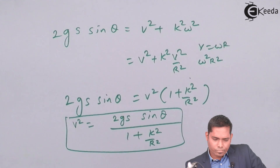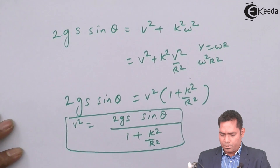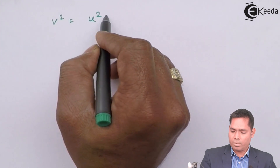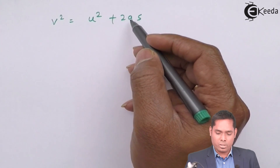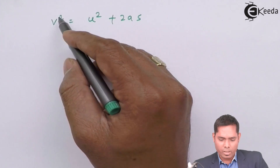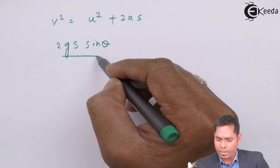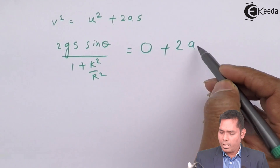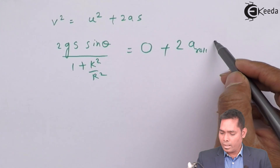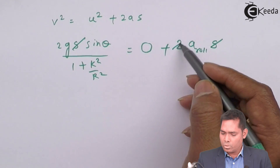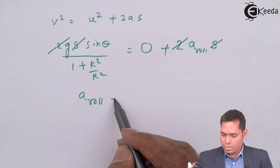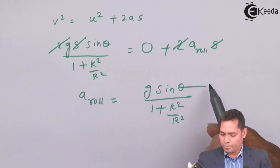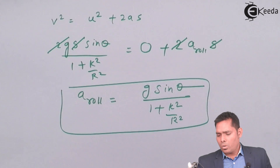To find acceleration, we use the kinematic equation v² = u² + 2as. Since the object is released from rest, u = 0, so v² = 2a·s. Comparing this with v² = 2g s sinθ / (1 + k²/r²), the s terms and the factor of 2 cancel, giving the rolling acceleration: a = g sinθ / (1 + k²/r²).